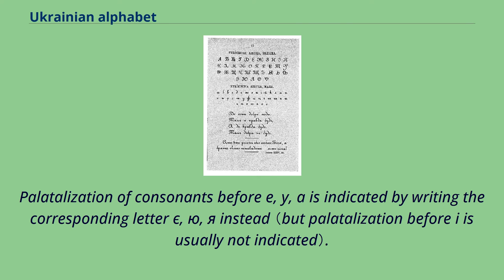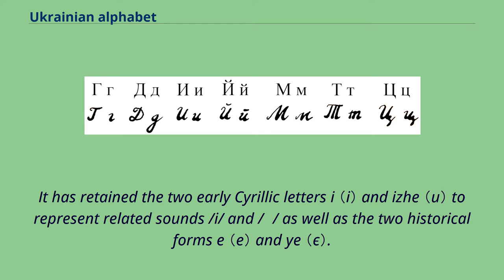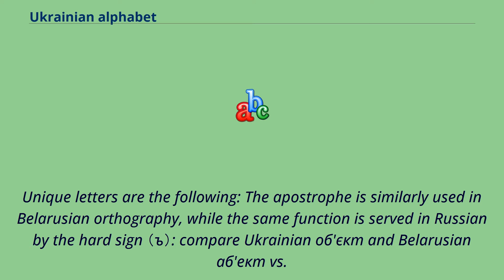Compared to other Cyrillic alphabets, the modern Ukrainian alphabet is most similar to those of the other East Slavic languages: Belarusian, Russian, and Rusyn. It has retained two early Cyrillic letters to represent the related sounds /i/ and a specific vowel sound, as well as two historical letter forms. The apostrophe is similarly used in Belarusian orthography, while the same function is served in Russian by the hard sign.